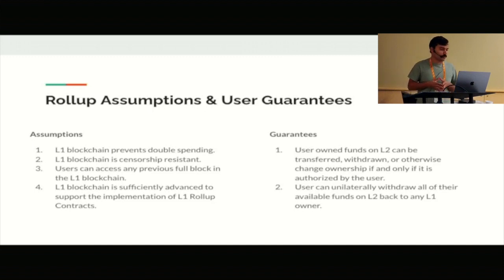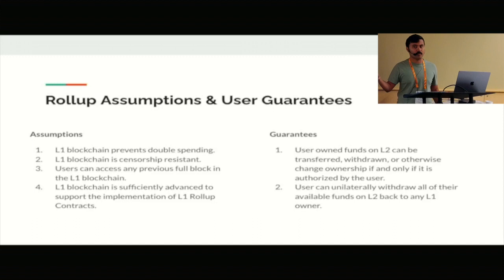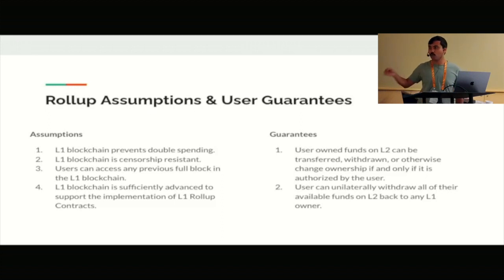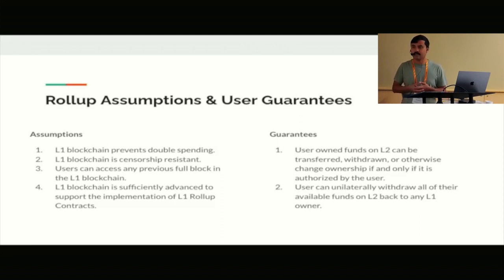These are already assumptions we're familiar with and that we make. Users can access any previous full block in the L1 blockchain — an assumption that's important when we talk about unilateral withdrawals. The fourth assumption is that the L1 blockchain — in our case Bitcoin — is sufficiently advanced to support the implementation of the L1 rollup contracts. What that really comes down to is that the L1 blockchain is able to verify a validity proof, along with some kind of covenant functionality.